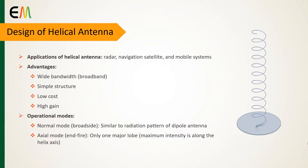The term axial mode refers to the tendency of the antenna to radiate in the direction of the helix ends instead of laterally, if the helix circumference is of the order of one wavelength. Moreover, the axial mode helix also radiates a predominantly circularly polarized wave.